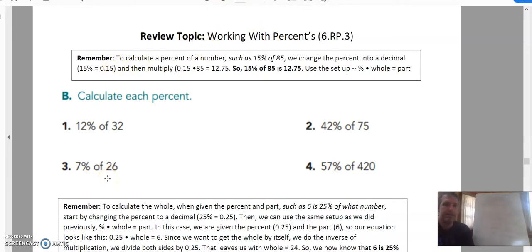Remember to calculate a percent of a number such as 50% of 85, we change the percent into a decimal, so for example, 15% would equal 0.15, and then multiply 0.15 times 85 to equal 12.75, and notice there's no percent sign on our answer. So basically we're using this equation: percent times whole equals part, and we're going to come back to that because that's a really important equation.